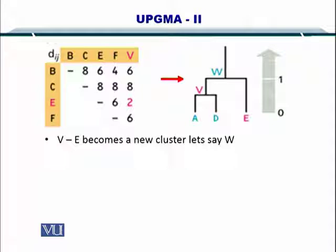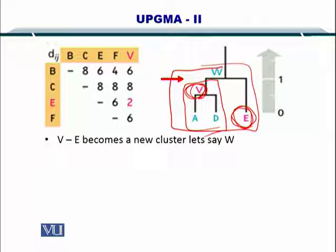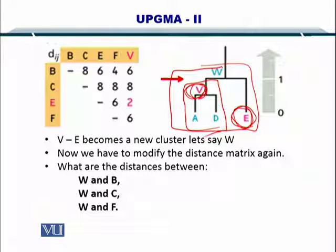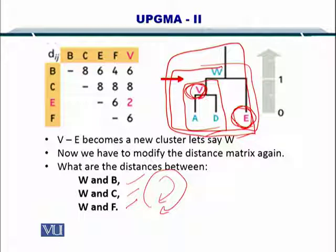Remember that A and D earlier combined into a cluster V, and now we are proposing to create a cluster between V and E and we have named it W. The distances that we are going to compute include W-B, W-C, and W-F. This process will be repeated until we have completed the tree. As you can see here, our tree is already shaping up very nicely. On the vertical axis you can see that the distance is stated as 1.